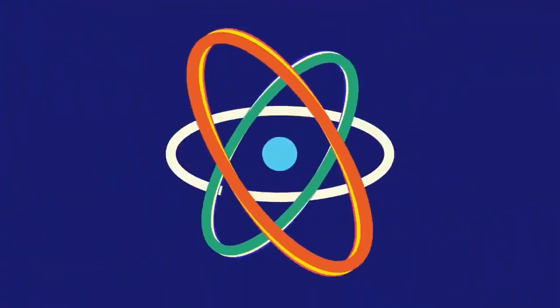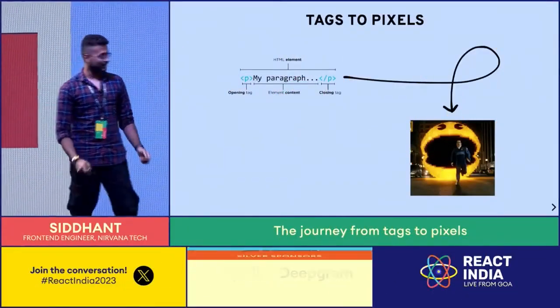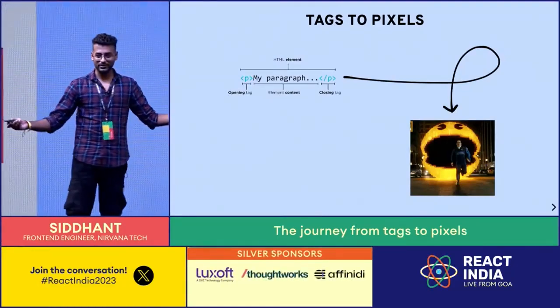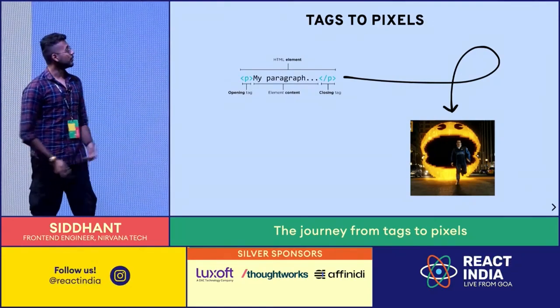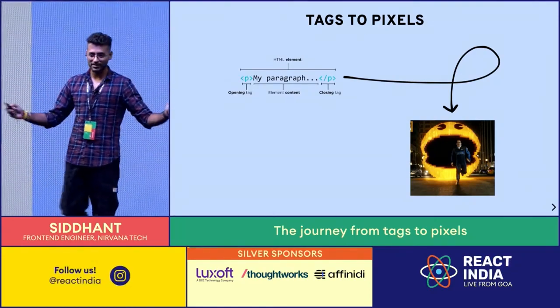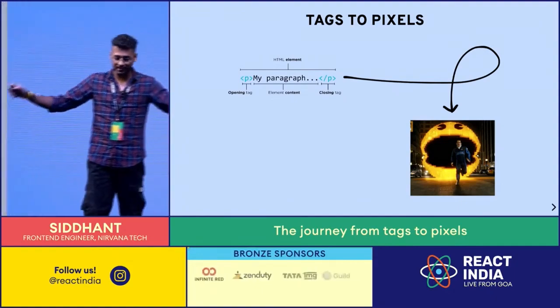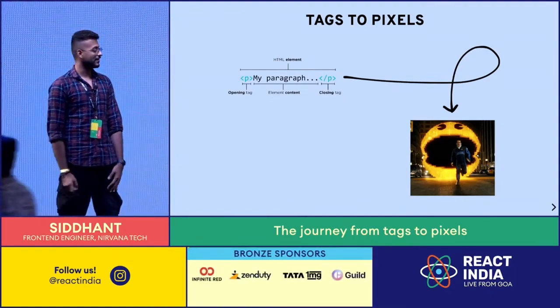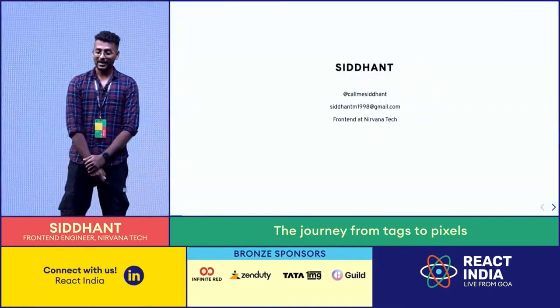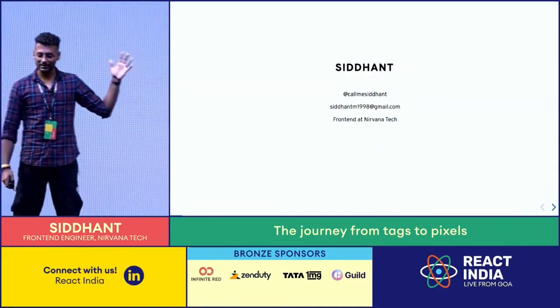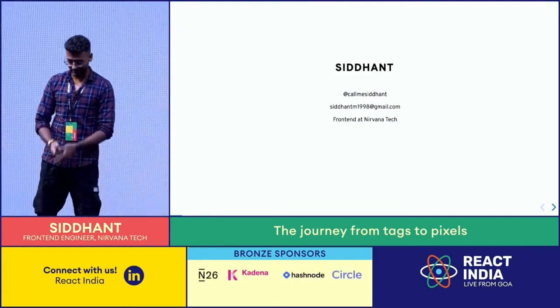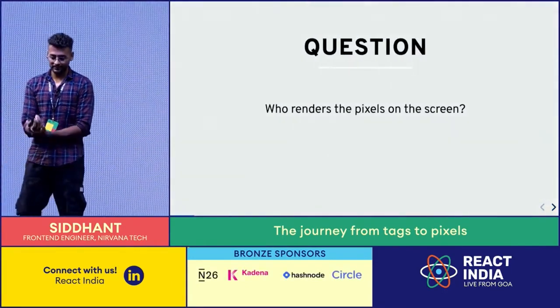This is computer graphics. We'll try to understand how Blink works and how when you write HTML, CSS, JavaScript, you end up with pixels on the screen. Pixels are controlled by device drivers and you write something in VS Code and somehow they end up there - some magic is being done in the middle, and this is where Blink comes in. My name is Sidhan, people call me Sid.